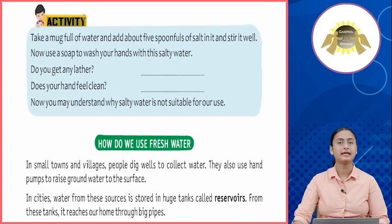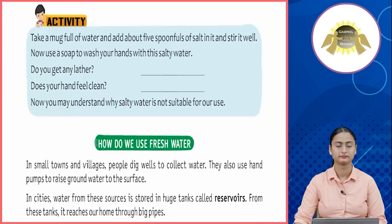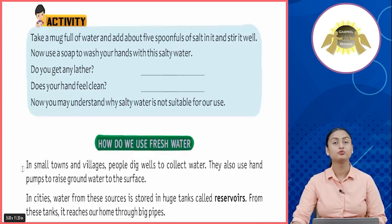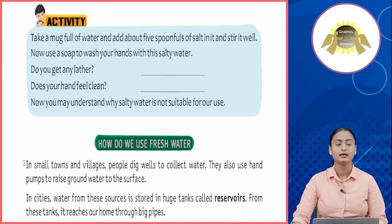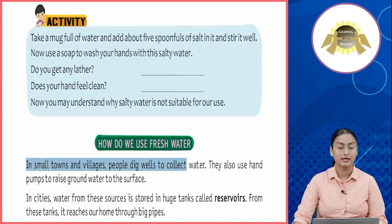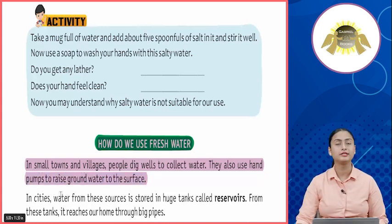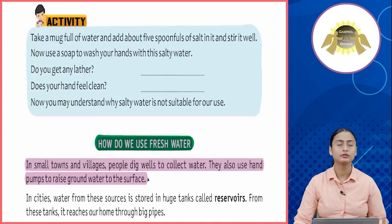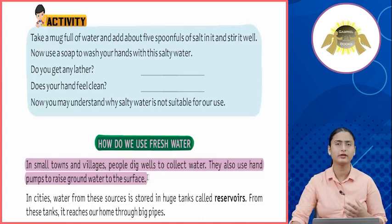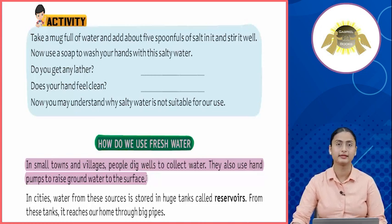Activity — toh abhi ek activity hai, isko aapko khud se perform karna hai. How do we use fresh water? In small towns and villages, people dig wells to collect water and use hand pumps to raise groundwater to the surface. Toh villages mein gaon mein kuwe khode jaate hain jis mein paani nikala jata hai, aur saath saath hand pumps ya phir tube wells — in dono ke combination se villages mein paani ko extract kiya jata hai.